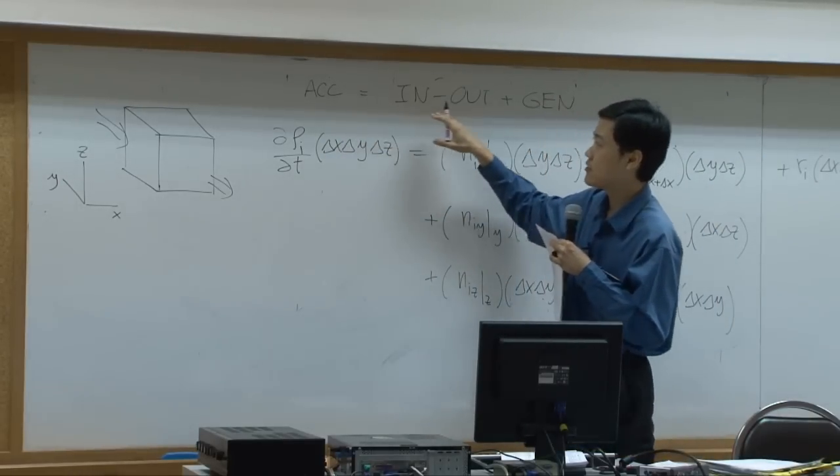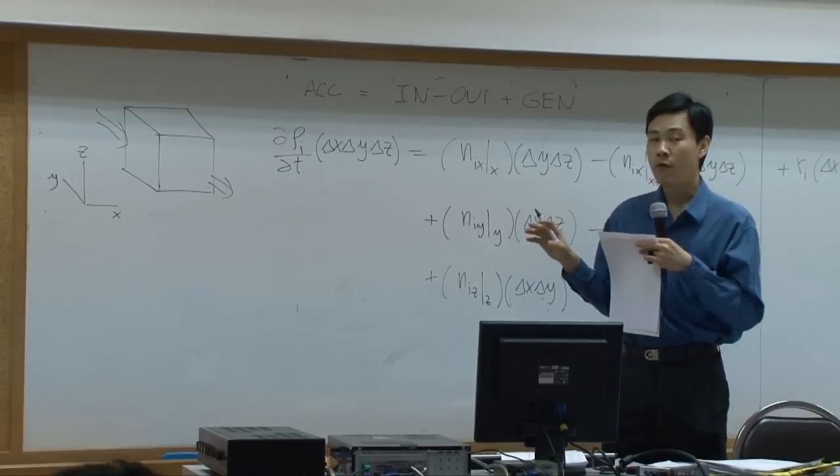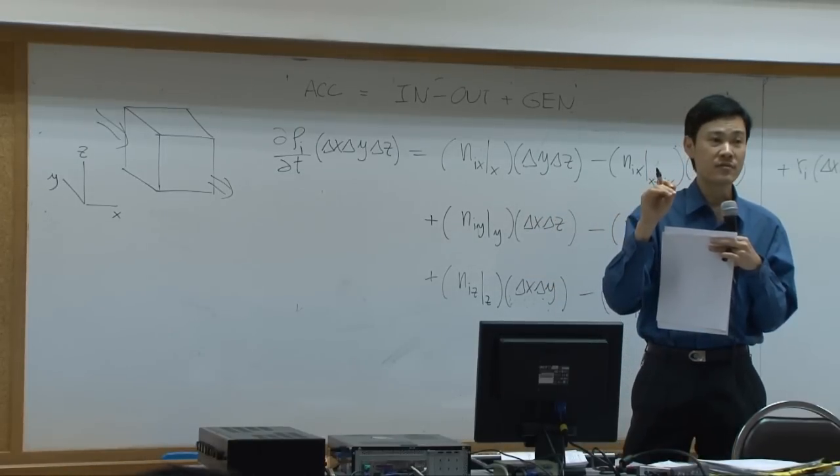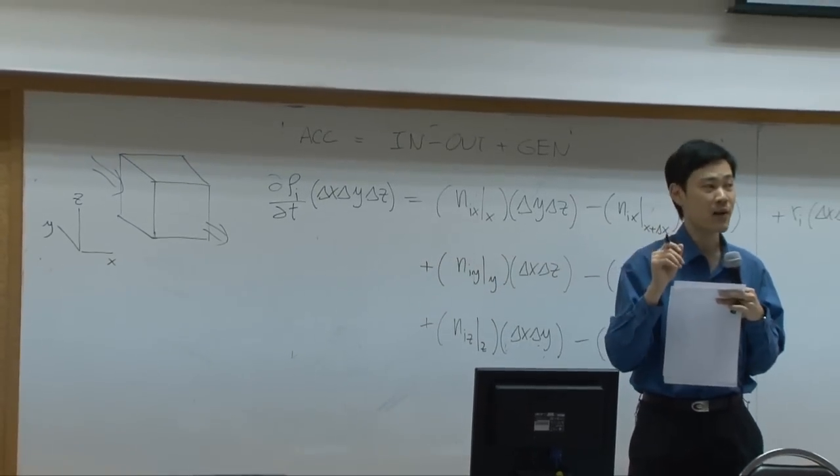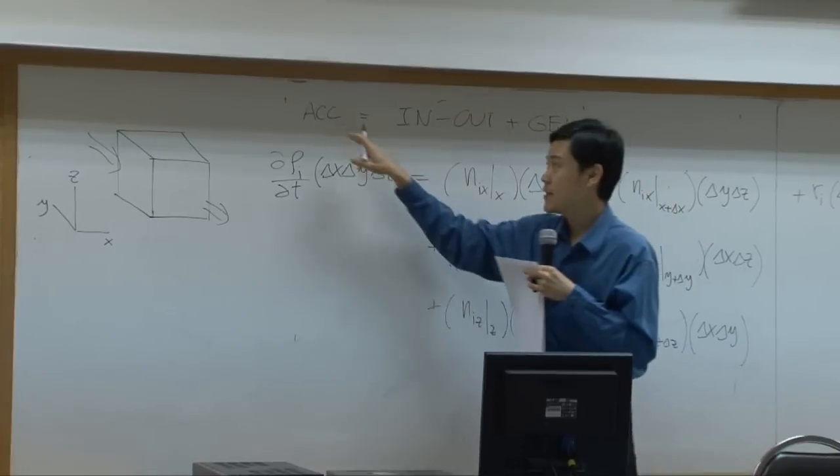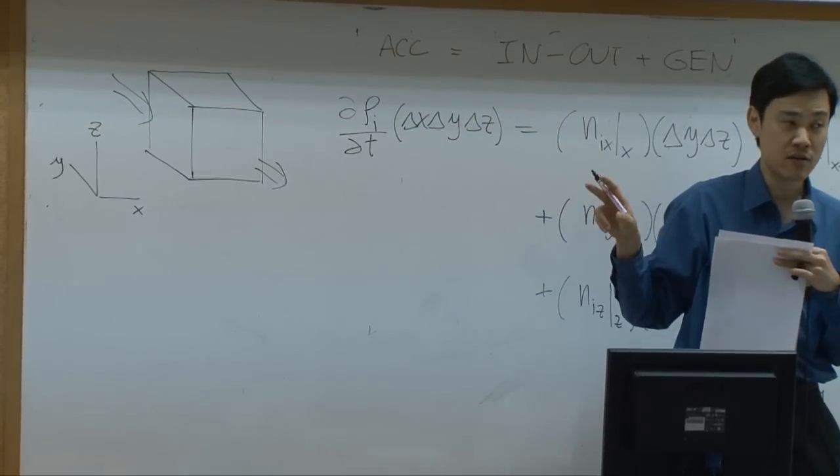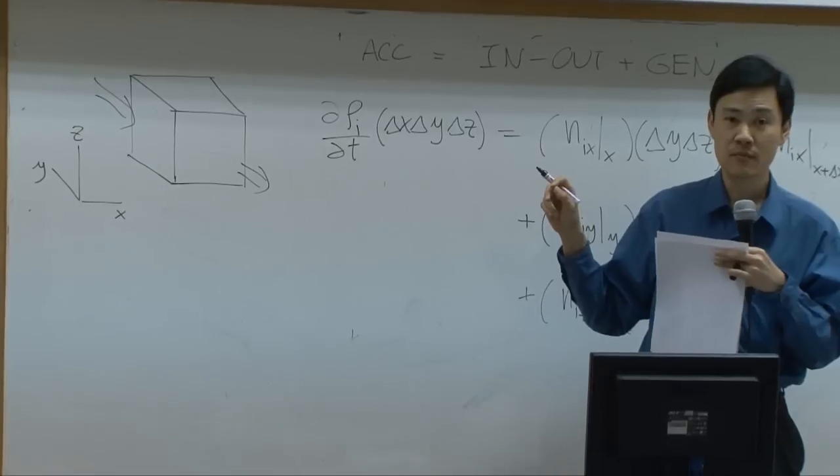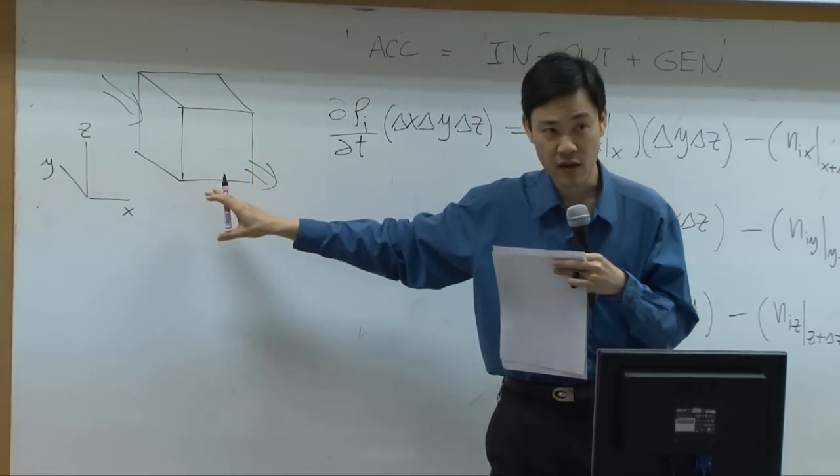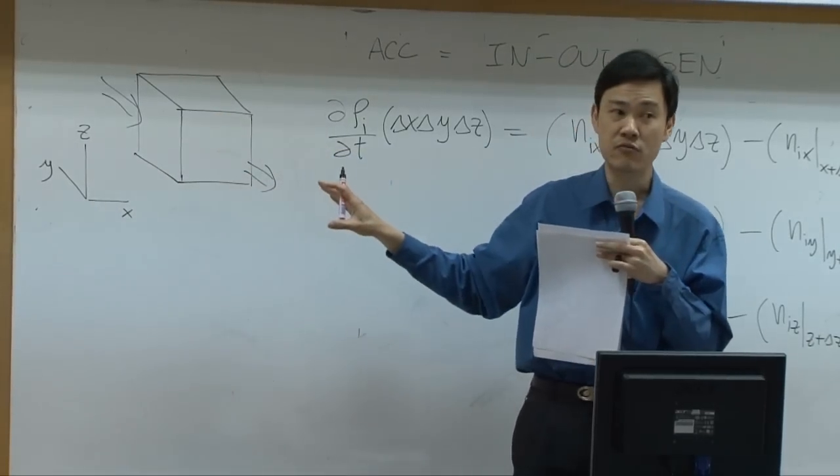Set it up as a shell balance. The shell balance would be accumulation equal to in minus out plus generation term. Of course, the accumulation term, this term would show you how much mass would be changed with respect to time within the system. So you need to concern the volume of the system itself and consider how much mass here would be changed with respect to time.